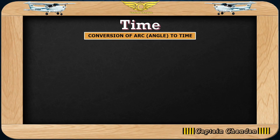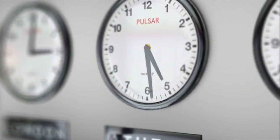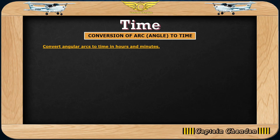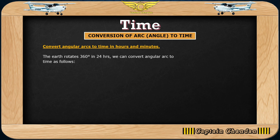We will cover the numerical part for arc-to-time conversion. Different countries have different local times — for example, India and the Philippines have a two-and-a-half hour time difference. Here, angular arc means longitude. Keep in mind: time is related to longitude, not latitude. The Earth rotates 360 degrees in 24 hours.